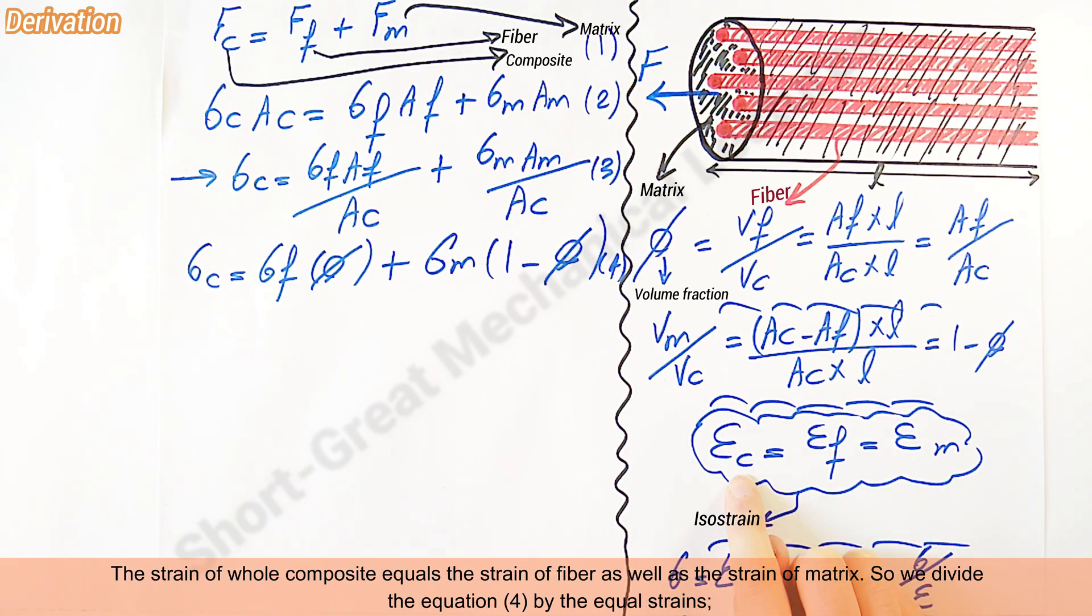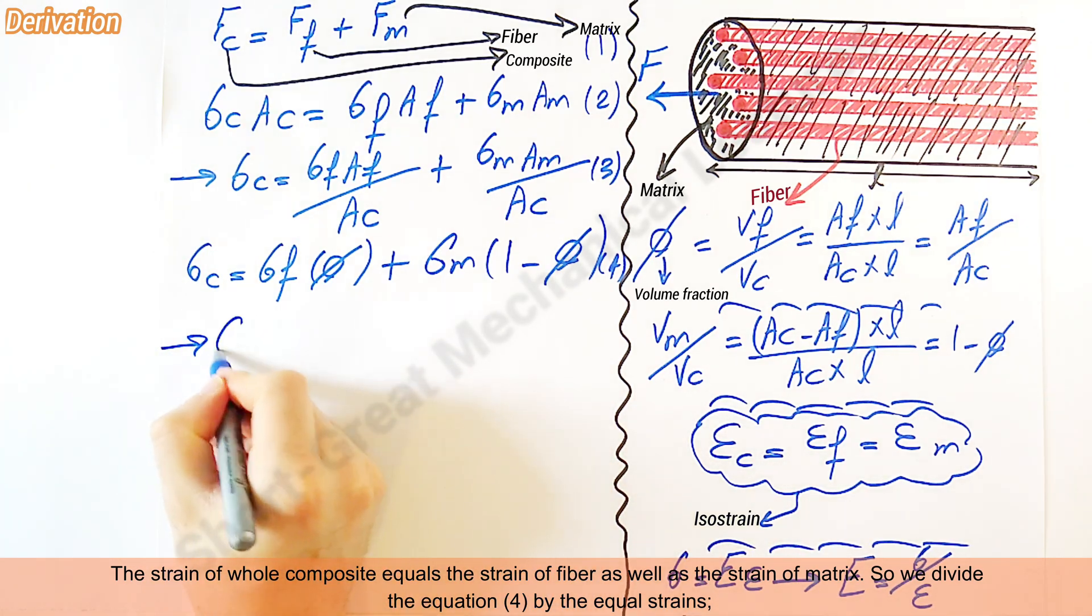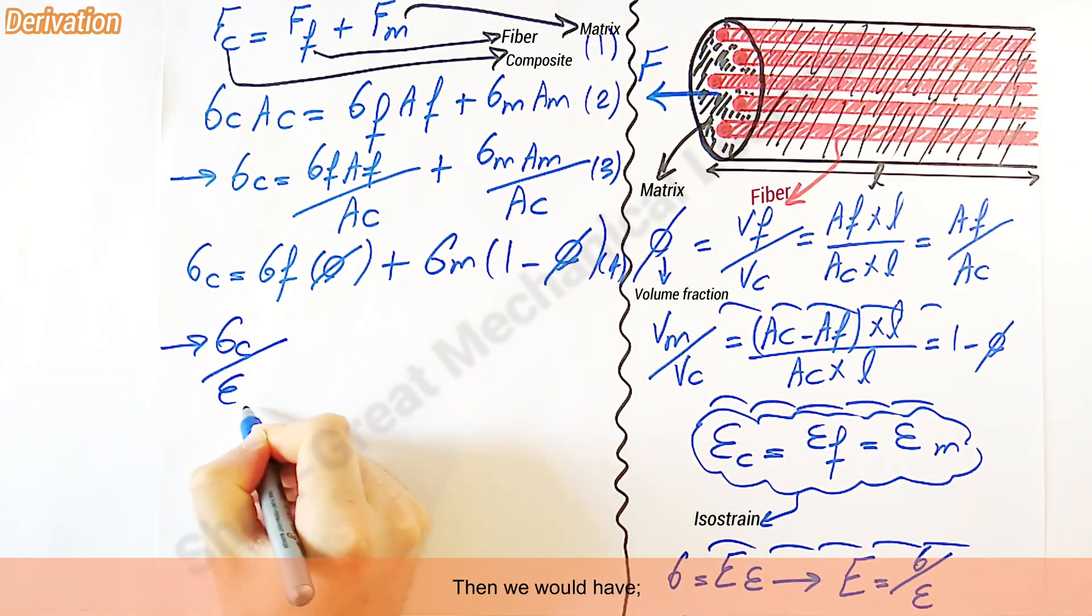Then we have the strain of whole composite equals the strain of fiber as well as the strain of matrix. We divide equation 4 by the equal strains.